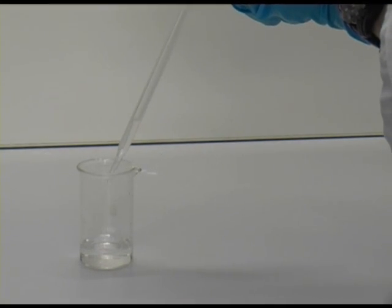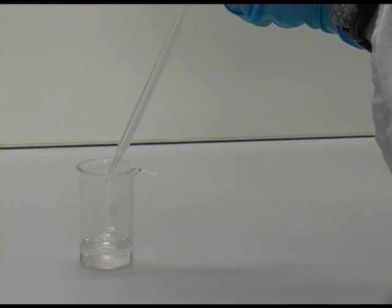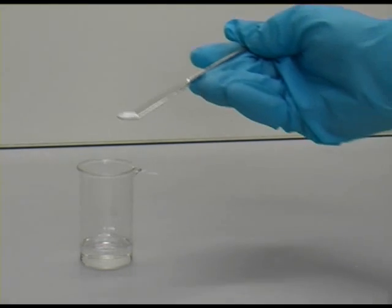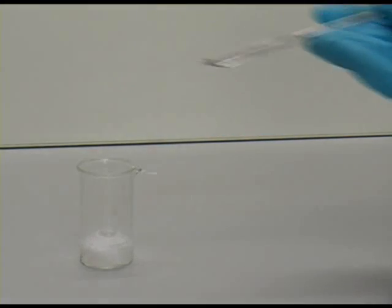If we add a measured amount of acid to this beaker and then add a measured amount of carbonate, you can see the fizzing that happens as the neutralisation takes place, producing carbon dioxide.